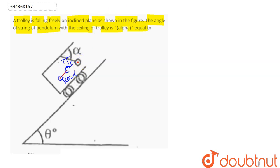And since this trolley is rolling down the inclined plane with acceleration given here as g sine theta.